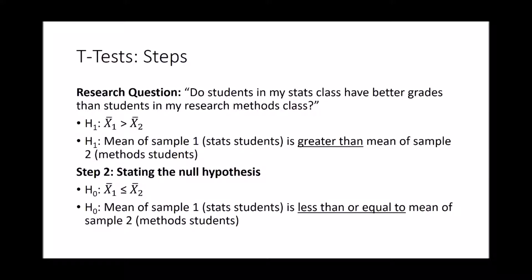Let's move back to our research question and talk about the null hypothesis. You have a hypothesis and a null hypothesis — the null hypothesis is the opposite of your hypothesis. Our research question is: do students in my stats class have better grades than students in my research methods class? Our hypothesis, identified by H sub 1, would be that the mean of group 1 (the stats group) is greater than the mean of group 2. In plain language: the mean of sample 1, the stats students, is greater than the mean of sample 2, the methods students.